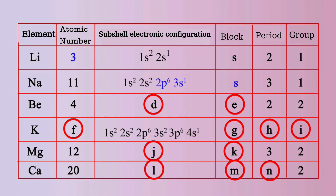The atomic number of Beryllium is 4. Its subshell electronic configuration can be written as 1s2, 2s2. In this case, the last electron is added in the s subshell. Hence, Beryllium is an s block element.